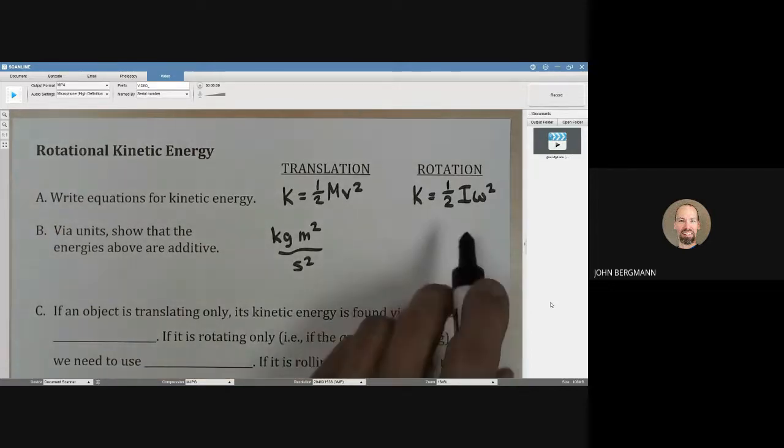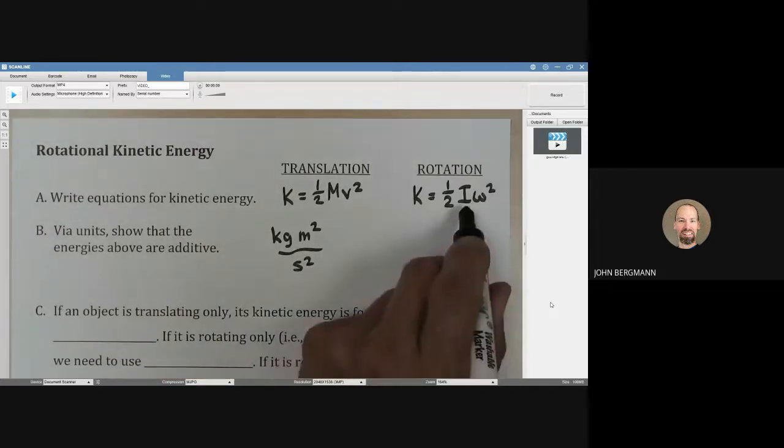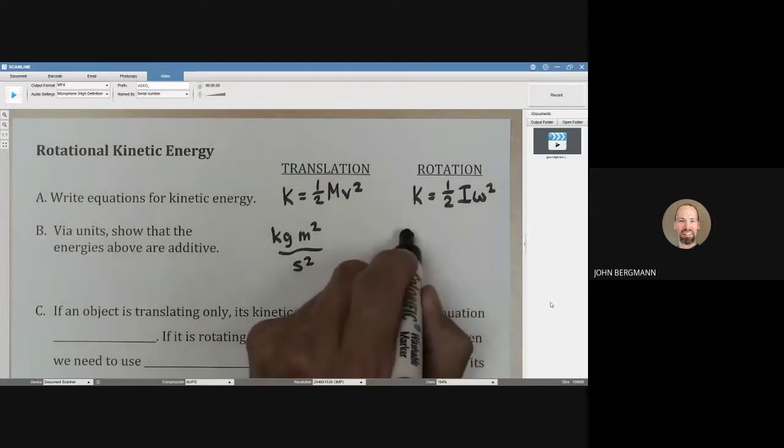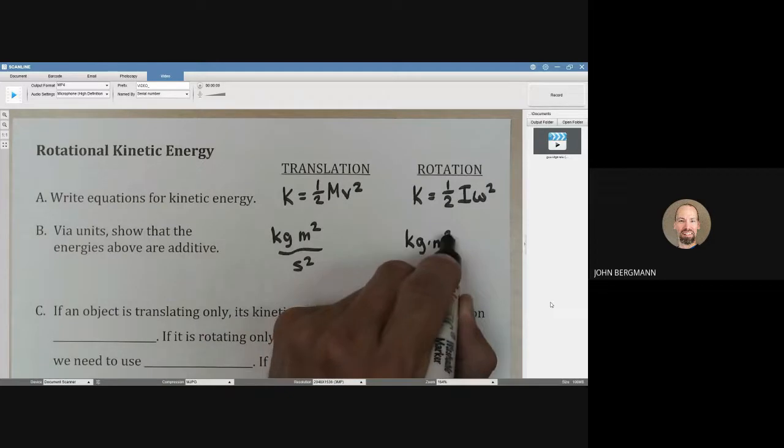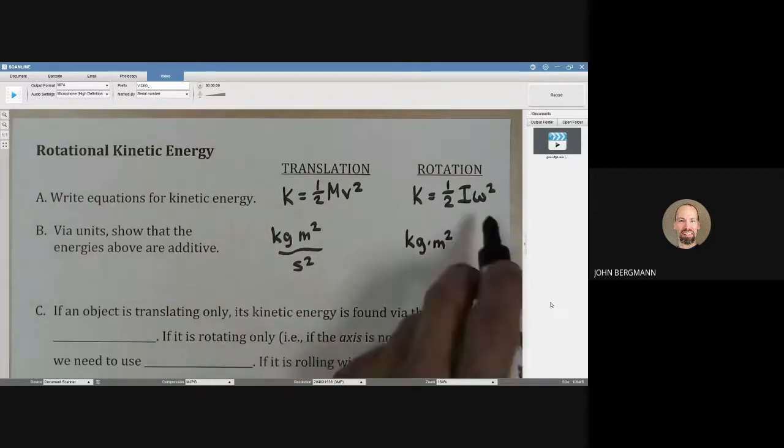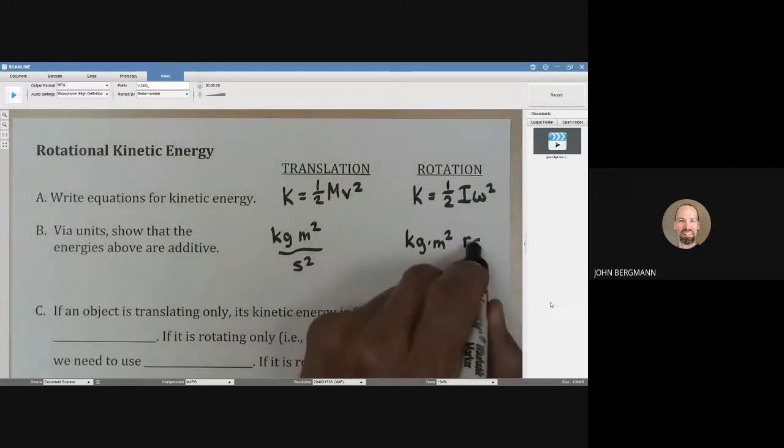What about over here? We remember that the unit for moment of inertia is kilogram meters squared. And then for omega, that would be radians per second. So we'd have radians squared per second squared.